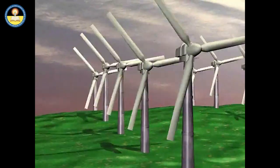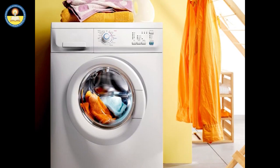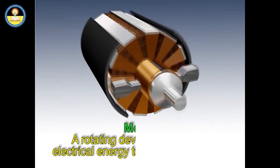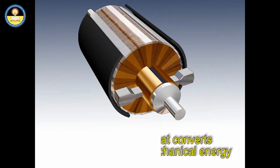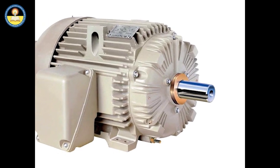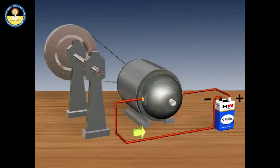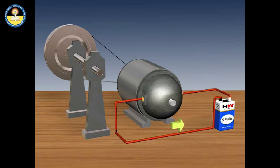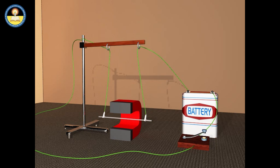In most of the machines that generate rotational motion, such as electric fans and washing machines, a motor is used. It is a rotating device that converts electrical energy to mechanical energy. Electric motors are operated by direct current as well as alternating current, but here we will discuss the motor operated by direct current sources such as a cell or a battery. When a current-carrying conductor is placed in a uniform external magnetic field in a direction other than the direction of the magnetic field, it experiences a magnetic force.